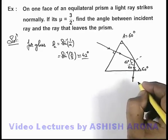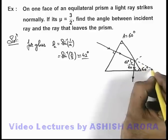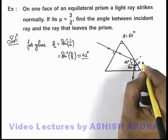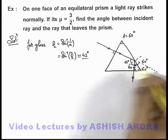So here we can see that with respect to the incident direction, the light ray will be deviated by an angle of 60 degrees.